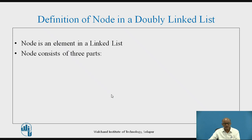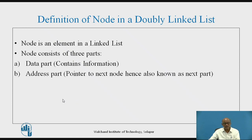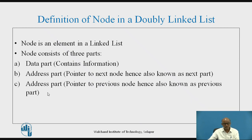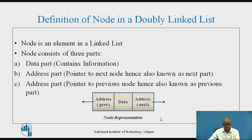A node is an element in a linked list. A node consists of three parts in a doubly linked list. The first part is called the data part, which contains information. The second part is the address part, which is the next pointer holding the address of the next node. The third part is the address part called the previous pointer, pointing to the previous node in the list. This is the representation of a node in a doubly linked list.